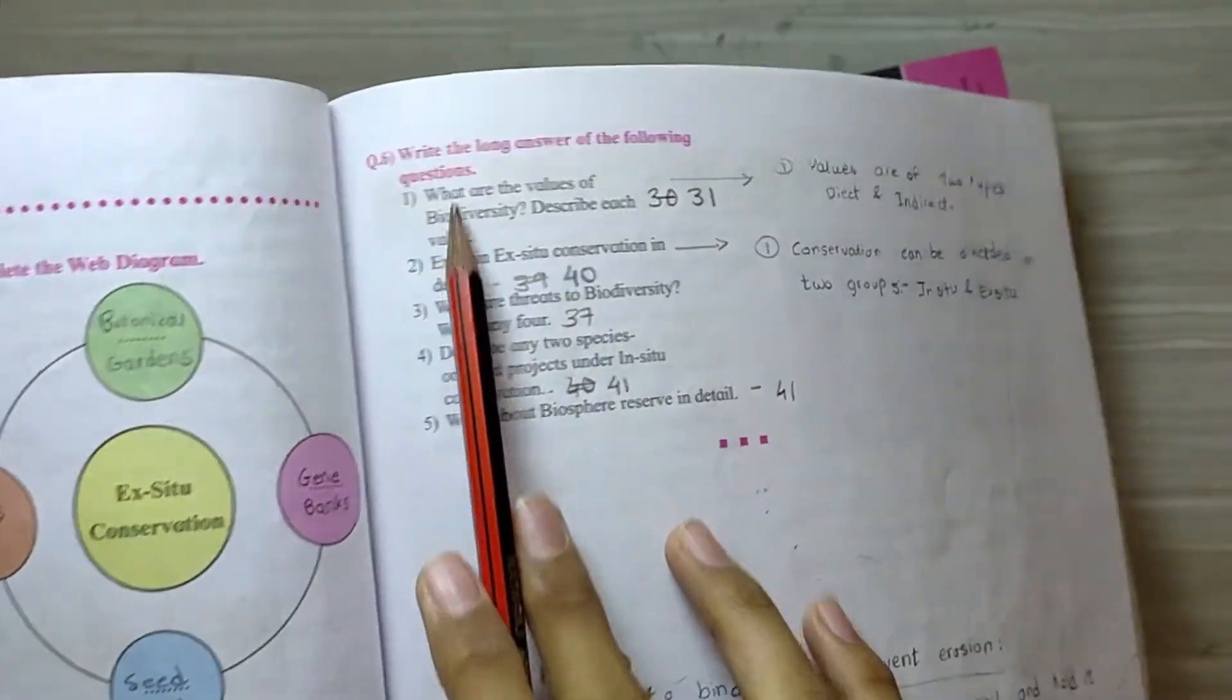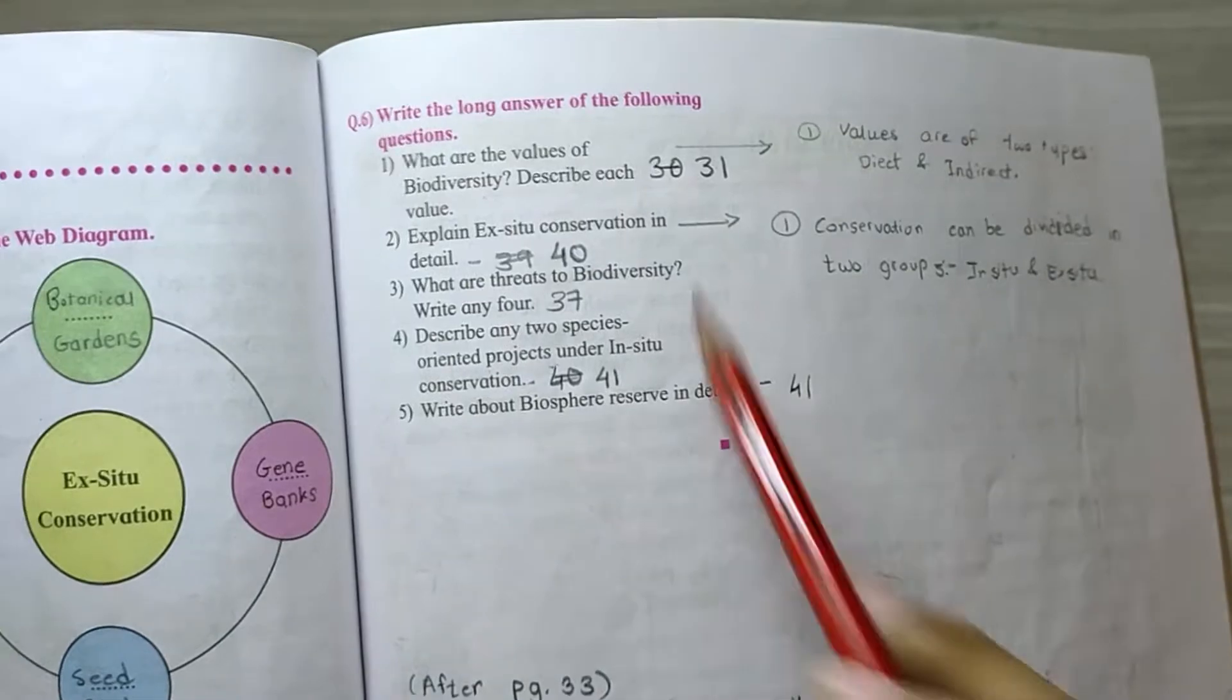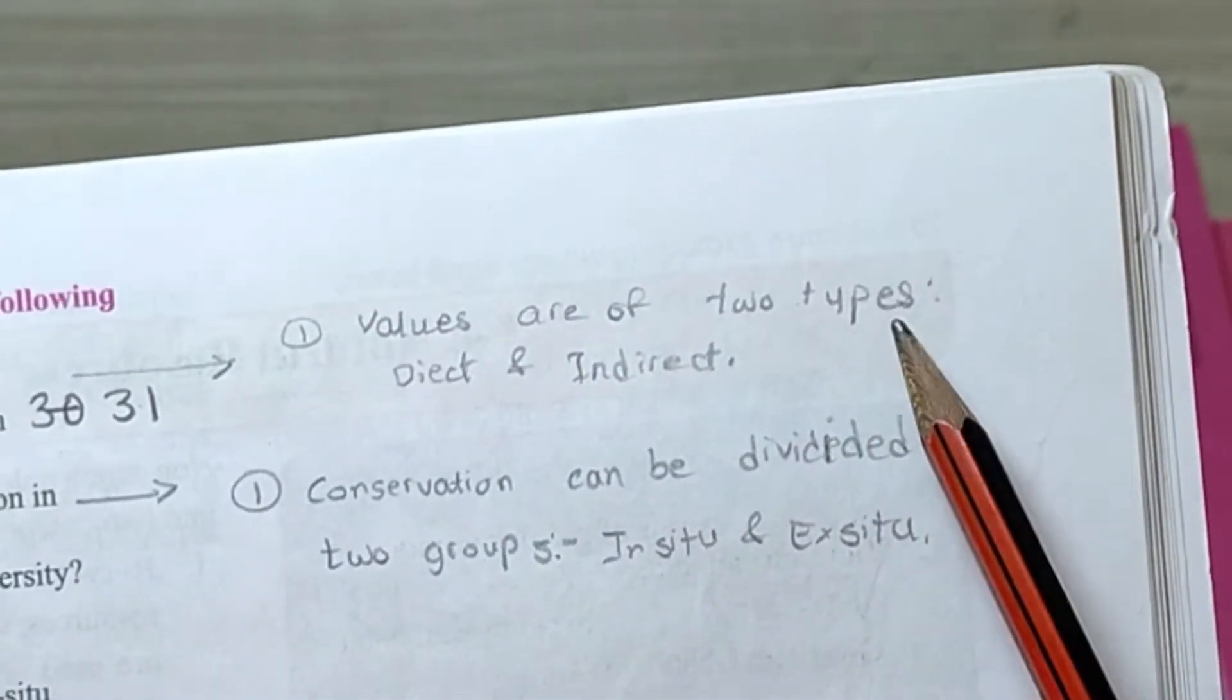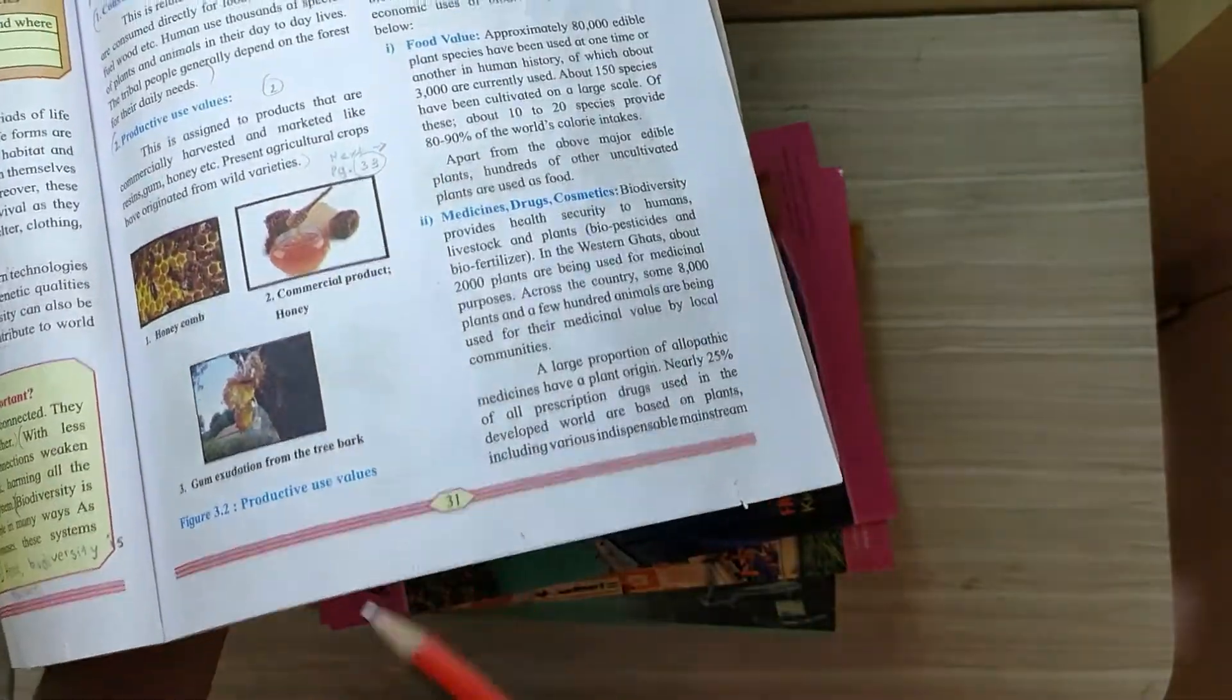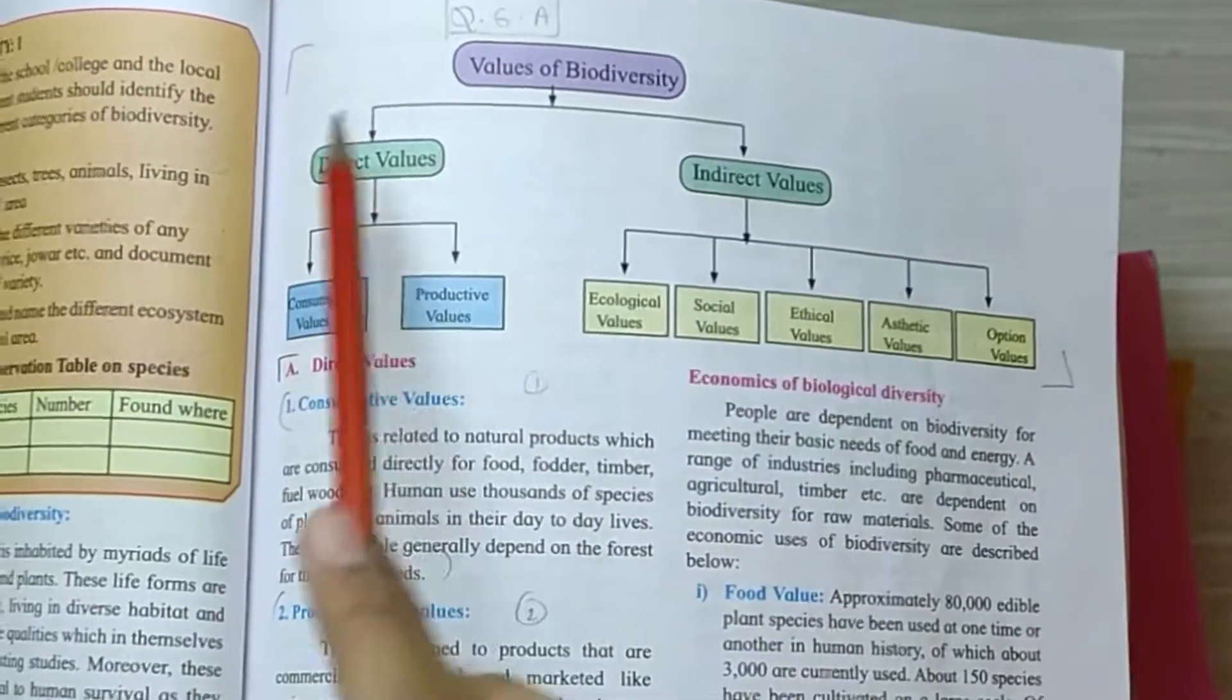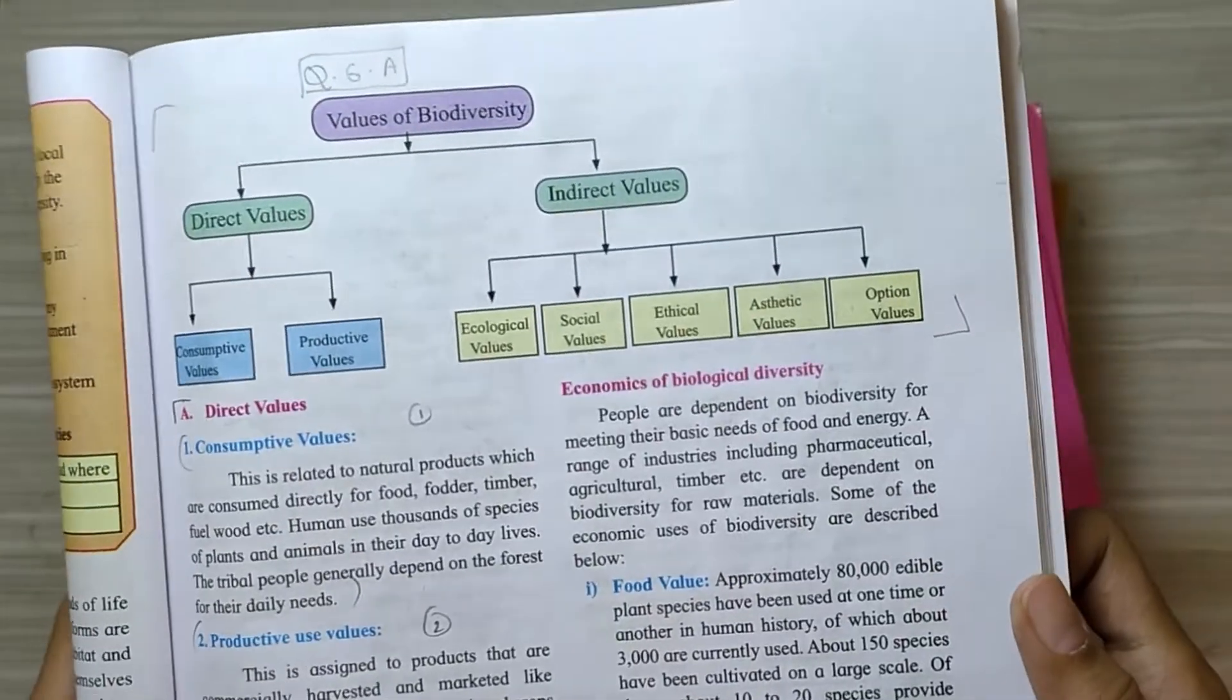The next question is question number 6, write long answers. The first is, what are the values of biodiversity, describe each value. It is on page number 31, but first point, you have to write it as values, biodiversity values are of two types, direct and indirect, and then you can write this entire answer which is on page number 31, values of biodiversity. You can also draw this flowchart.